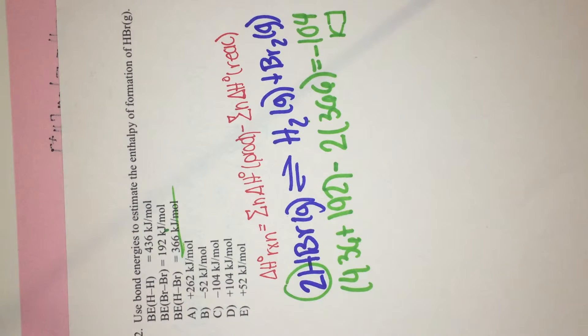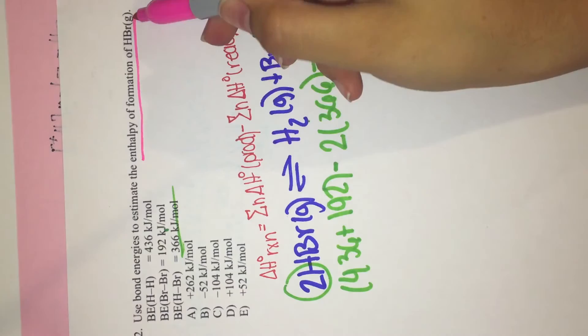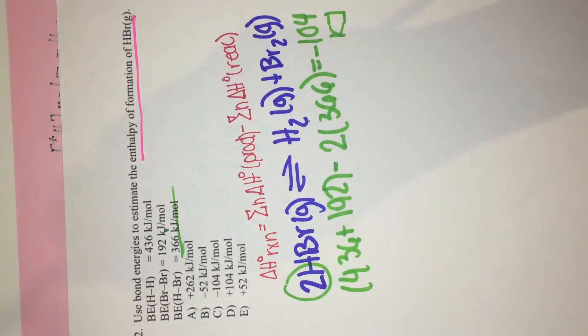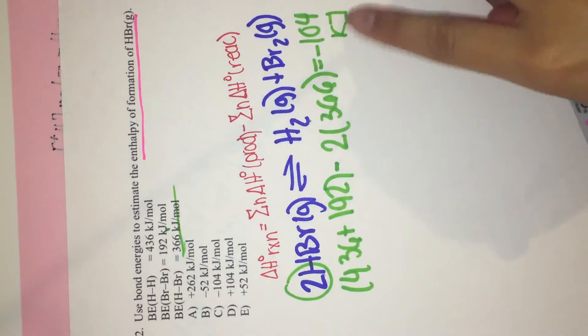We want the enthalpy of formation of HBr, not 2HBr. Therefore we divide this by 2.